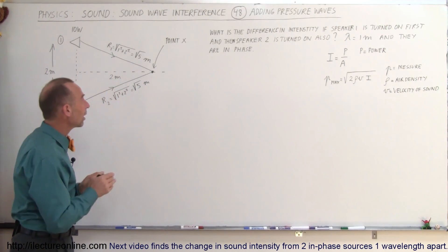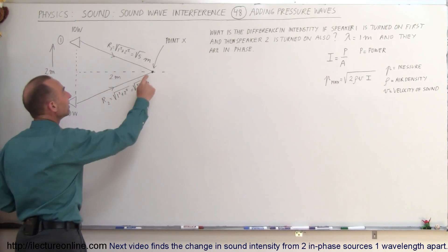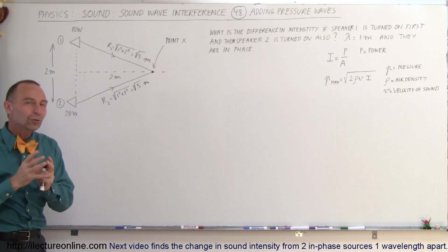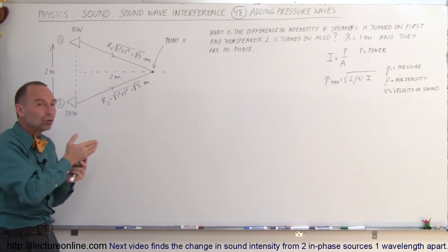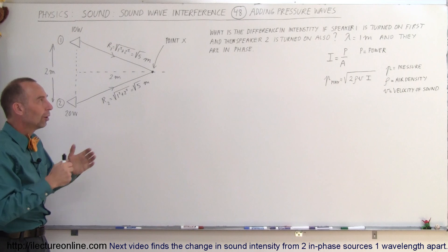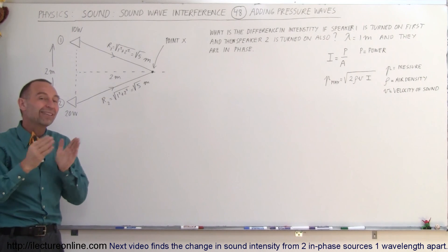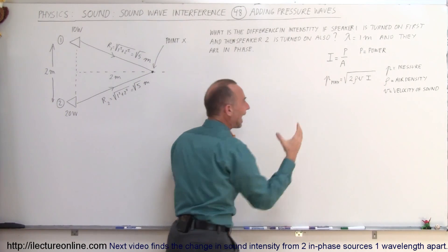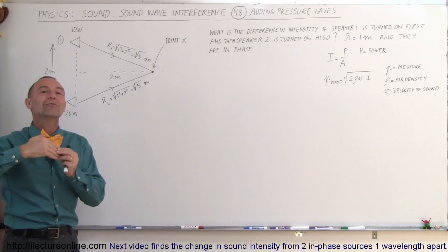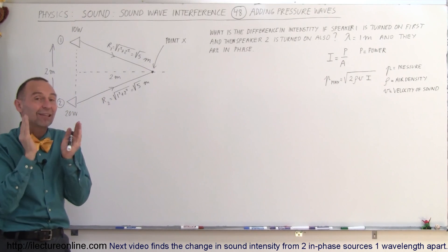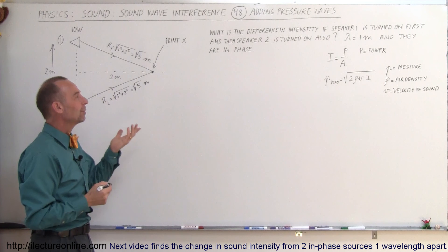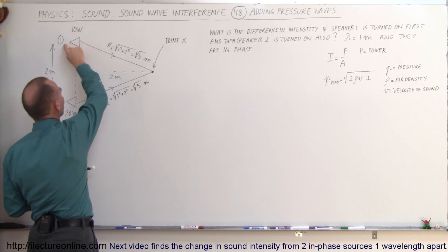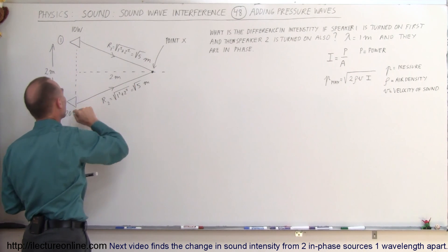The way you need to solve these problems is: first calculate the intensity of the sound at this location from each of the two sources. Then, in order to add the two together, we have to convert from intensity to pressure — because to do sound interference we add pressures, not intensities. We add the two pressures together, then reconvert back to intensity before calculating the difference in decibels. So first we find the intensity at this location from source 1 and from source 2.